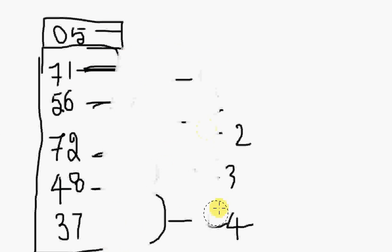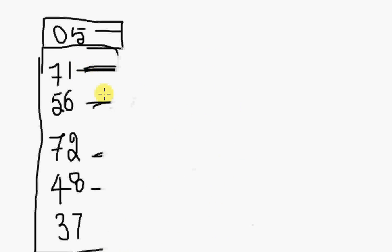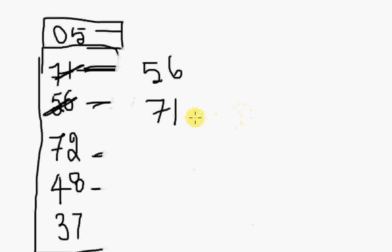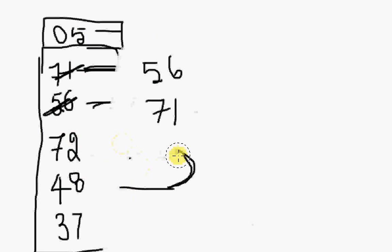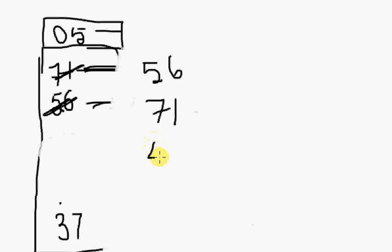Now let's arrange by comparing one by one. Comparing the first and second elements: 56 is lesser, so in ascending order we keep 56 on top and 71 below — we write back. Now 71 is in the second memory. Compare second and third: 71 is less than 72, so no swap needed — swap is not required. Now compare third and fourth: 48 is less than 72, so we swap them — 48 and 72.